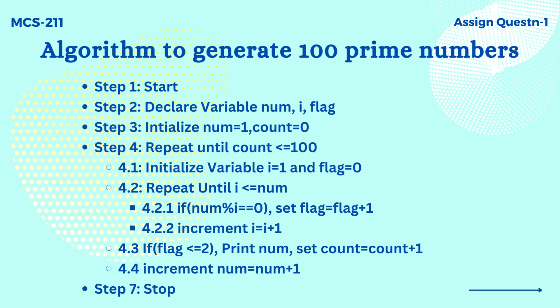We first define a variable num and initialize it to 1 and a variable count equals 0 and put it in a loop till it reaches 100.